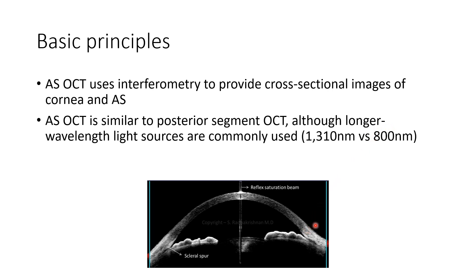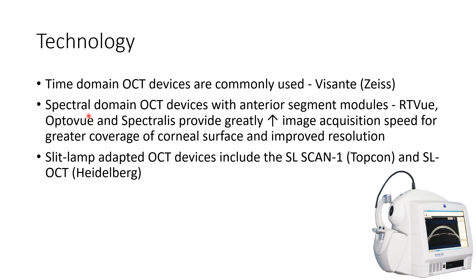This picture shows an ASOCT image of a normal eye. Regarding technology in ASOCT, time domain OCT devices are commonly used — an example being Visante by Zeiss. Spectral domain OCT devices with anterior segment modules, such as RTVue, OptoVue, and Spectralis, provide greatly increased image acquisition speed for greater coverage of the corneal surface and improved resolution. Slit lamp adapted OCT devices include the SL-Scan1 by Topcon and SL-OCT by Heidelberg. This picture shows Visante, which is an ASOCT device.